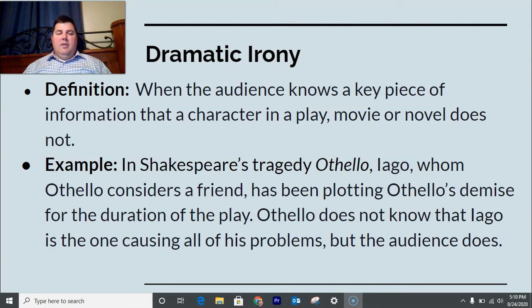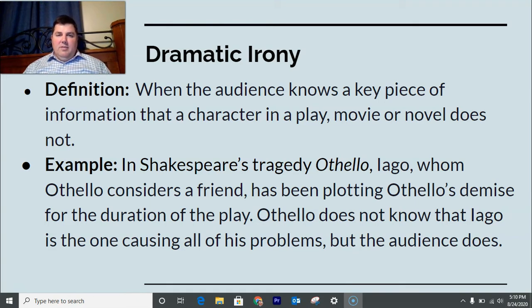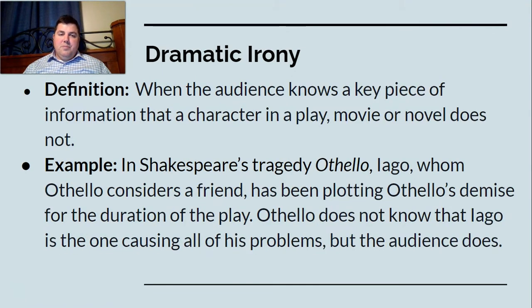Another example of dramatic irony is Shakespeare's tragedy Othello. Iago, whom Othello considers a friend, has been plotting Othello's demise for the duration of the play. Shakespeare tells us this through speeches where Iago turns to the audience and reveals how much he hates Othello and is plotting against him. Othello gets accused of adultery — his wife does, actually — and the whole time it was Iago setting it up. We know what's really going on, but Othello doesn't. That's dramatic irony, and it's part of why it's a tragedy.